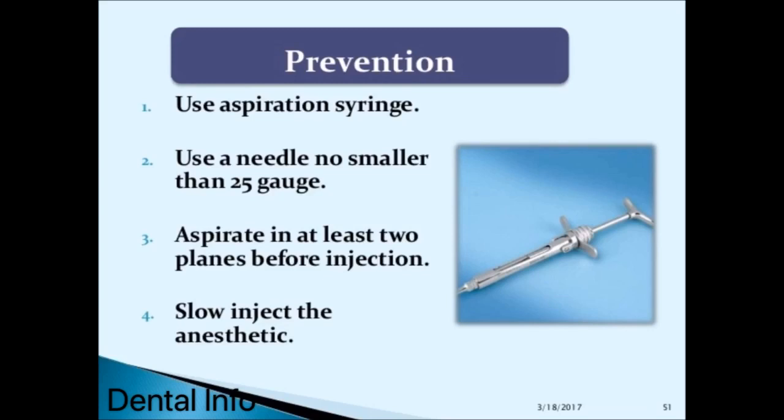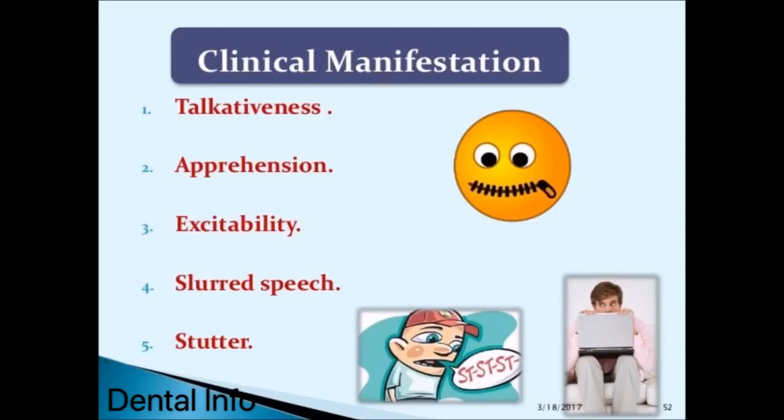Prevention of overdose: use an aspiration syringe, use a needle no smaller than 25 gauge, aspirate in at least two planes before injection, and inject the anesthetic slowly.